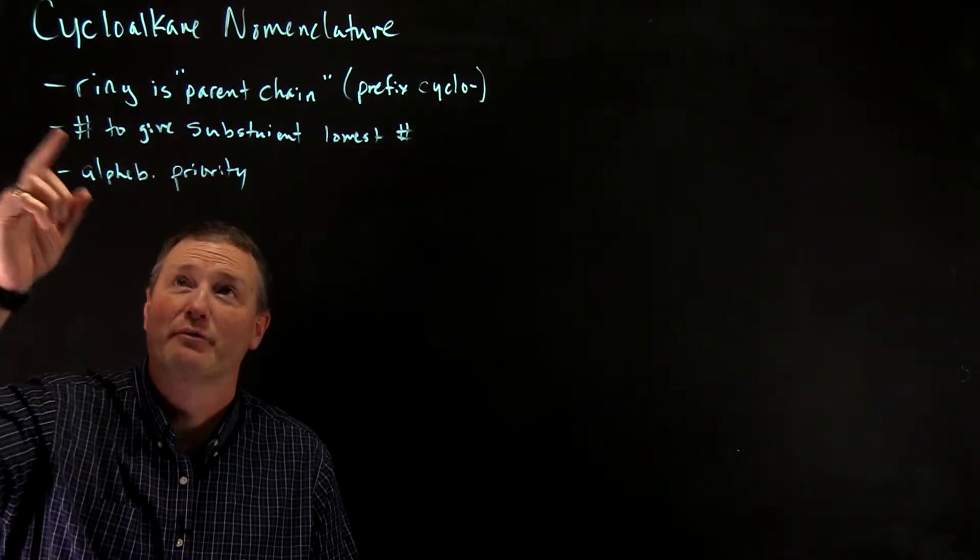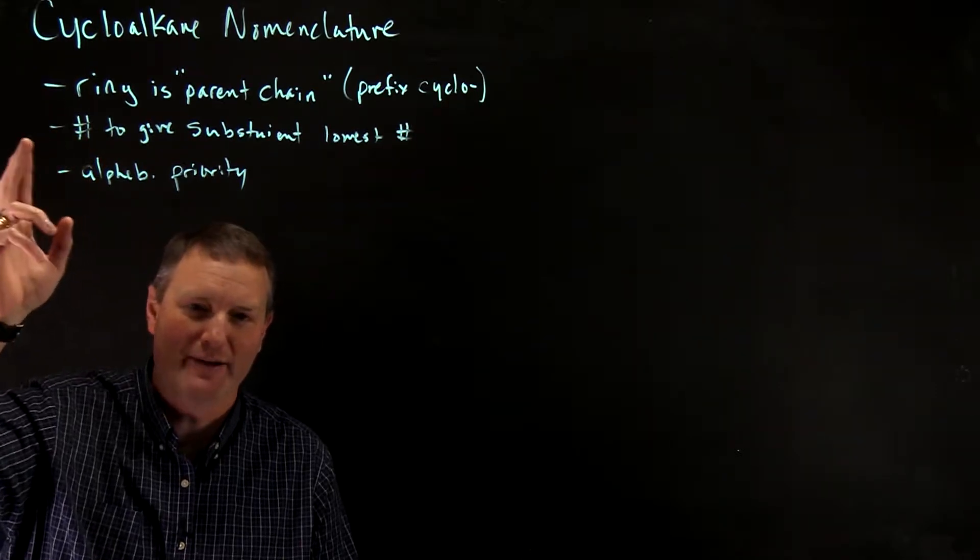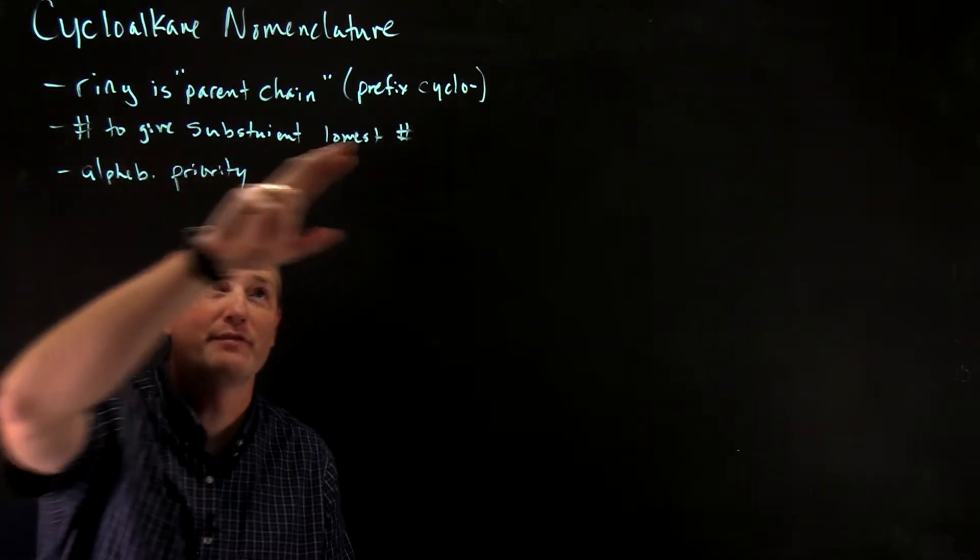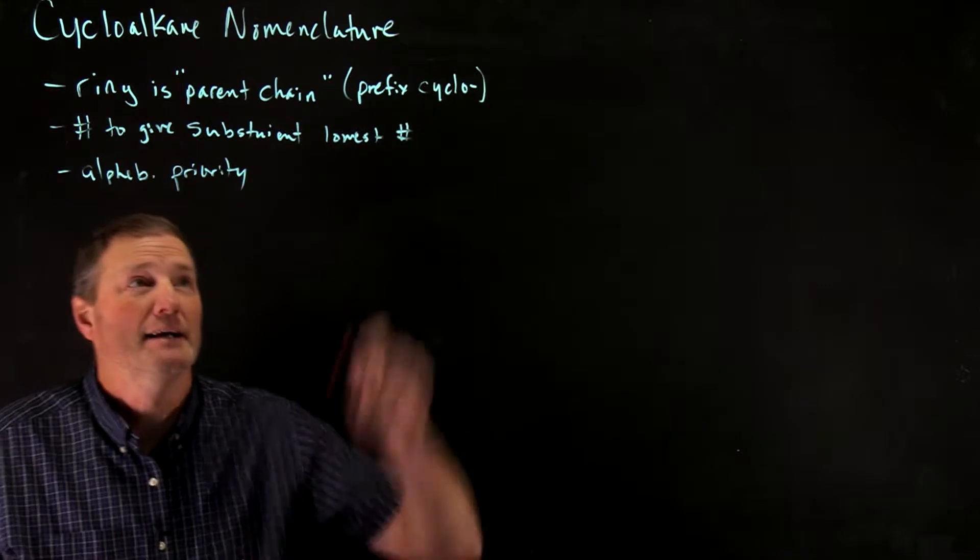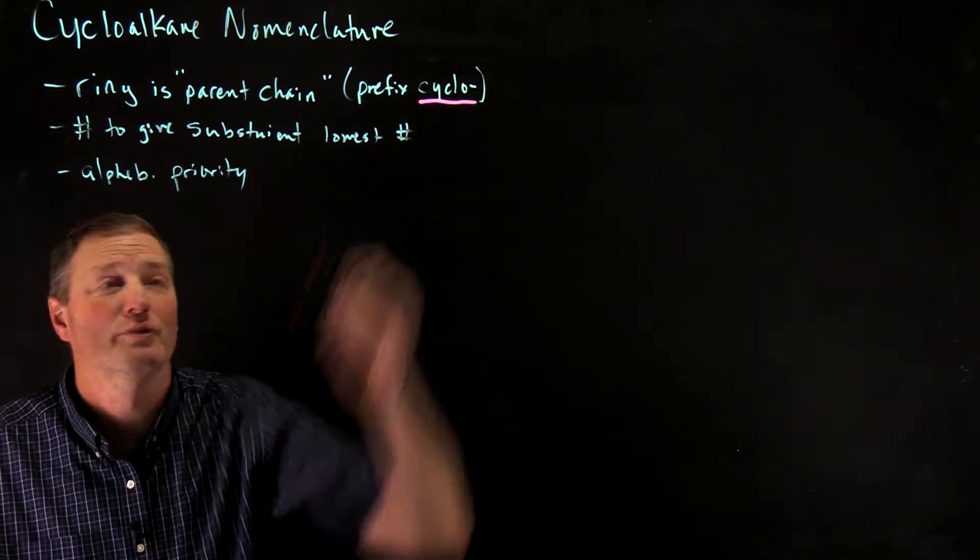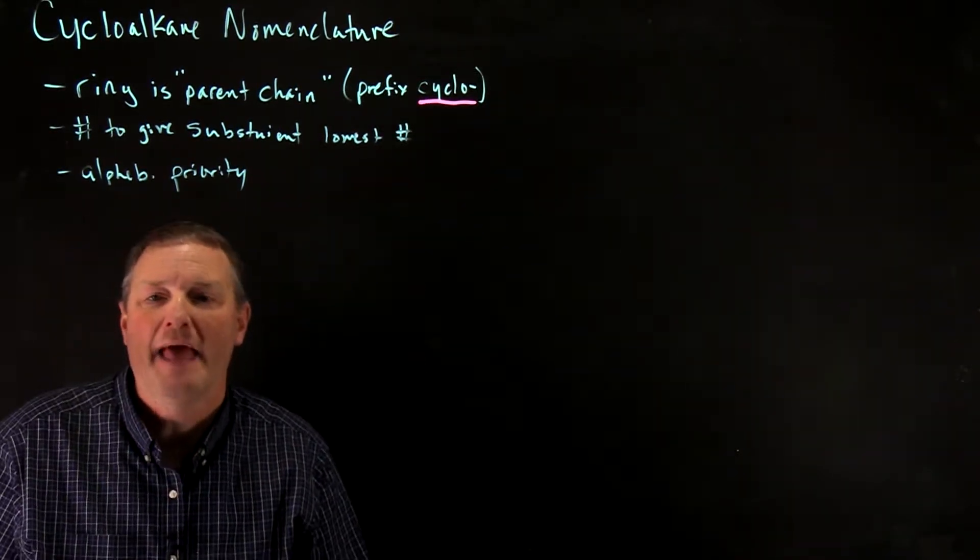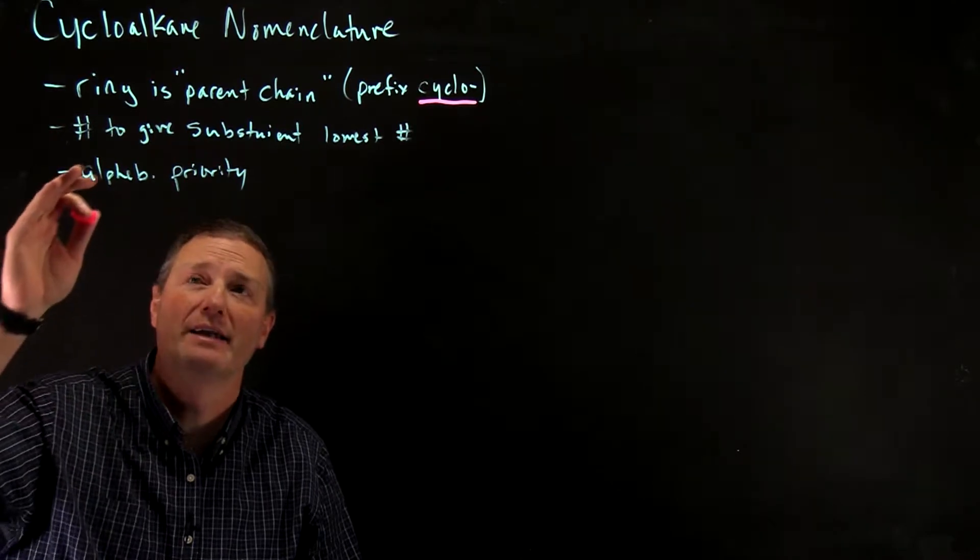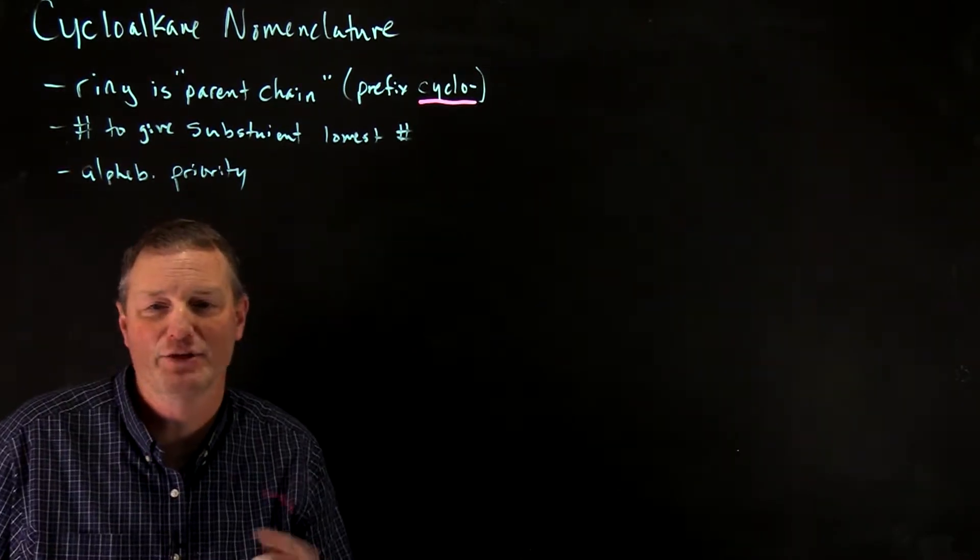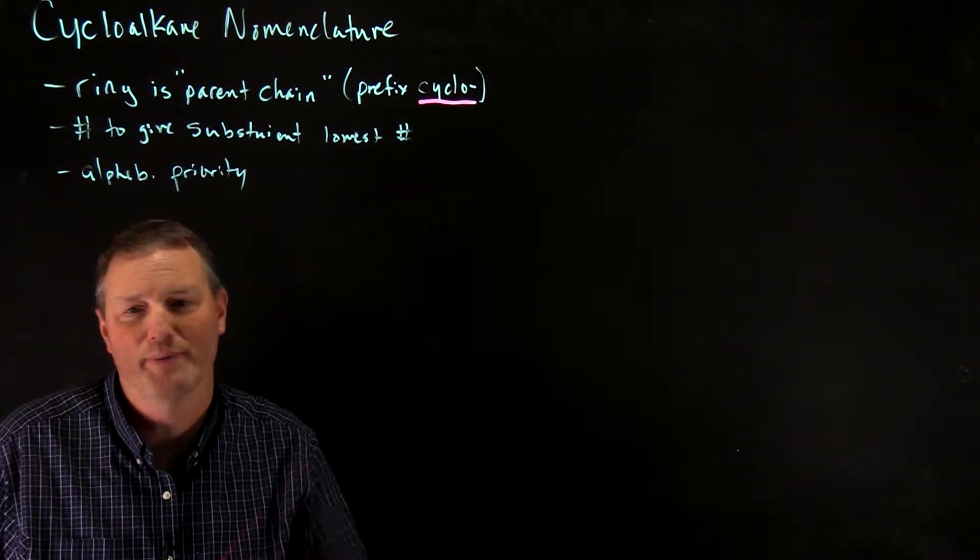First off, the ring is going to be the parent chain, and it's going to have the prefix cyclo in the name, so we'll do some examples. You want to always number the ring to give the substituents around the ring the lowest possible number.